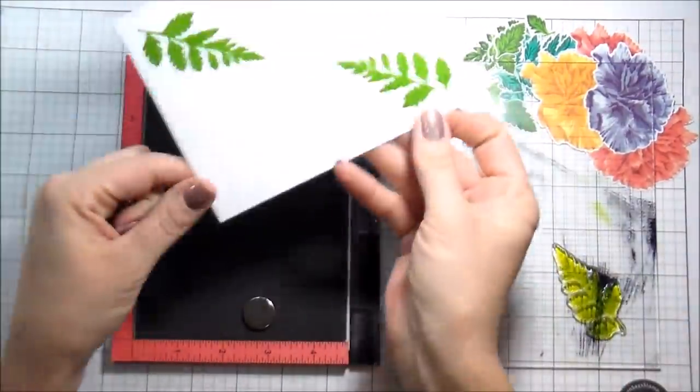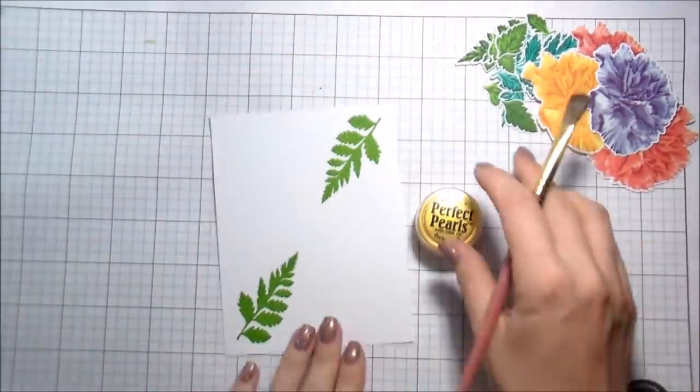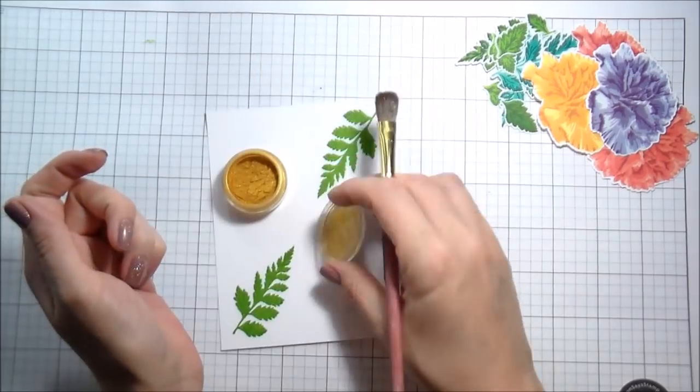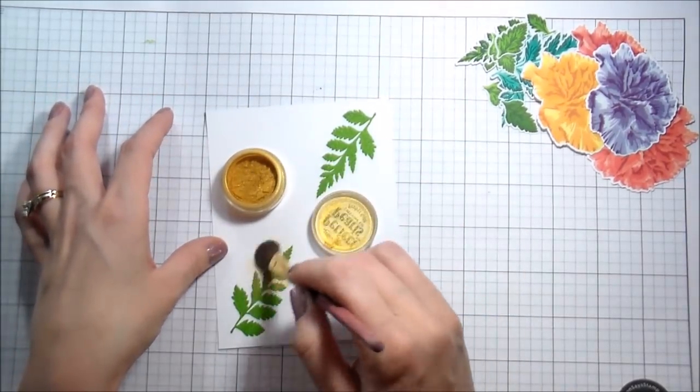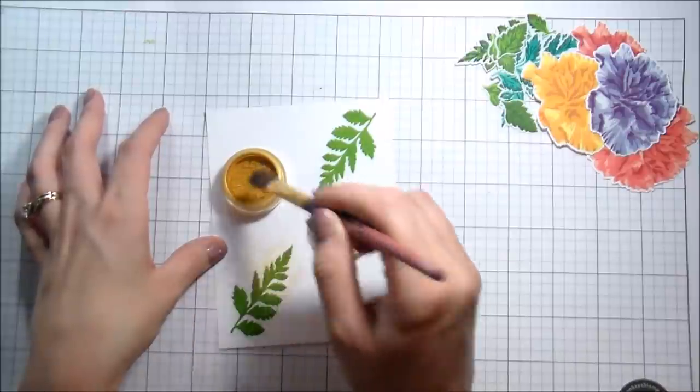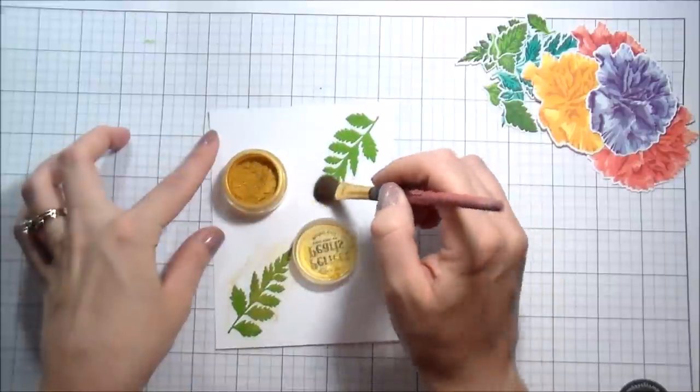And the reason I'm going to stamp in Versamark is because I want to add some gold accents. So the detail is going to be in gold. Originally I thought to myself, well, I'm going to gold emboss it, but me and gold embossing powder have a love hate relationship, meaning I love it in real life, but it photographs terrible. So I decided I was going to go in with the perfect pearls. And that would give me enough of the gold. It would stick to the Versamark as I padded it on and it would give me enough shine for the card without messing with my photography.